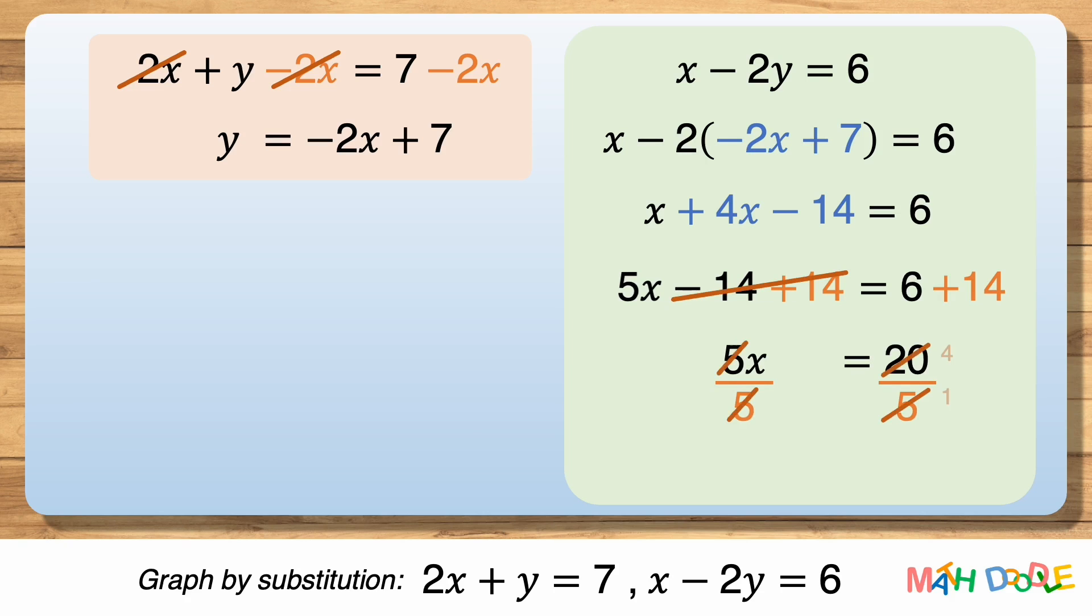Then, by dividing both sides by 5, the equation becomes x equals 4. And this tells us that x is 4.